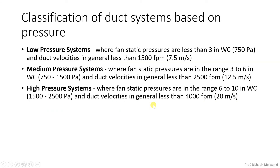Next is classification of duct system based on pressure. This classification has been made based on fan static pressure. When fan static pressure is less than 3 inches of water column and duct velocity is less than 1500 FPM — that is 7.5 meters per second — we consider it a low pressure system. In a medium pressure system, fan static pressure is in the range of 3 to some inches of water column and duct velocity in general is less than 2500 FPM — less than 13 meters per second. For a high pressure system, fan static pressure is in the range of 6 to 10 inches of water column and duct velocity less than 20 meters per second — these are high pressure systems.